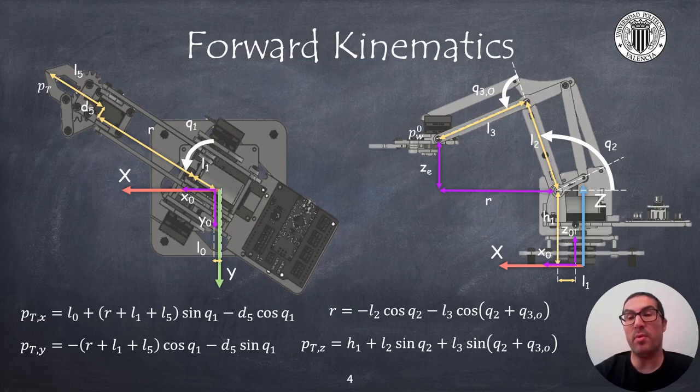The height of the gripper, that is, the z-coordinate, is obtained from angles q2 and q3o, again with simple trigonometric relationships, from the figure on the right.